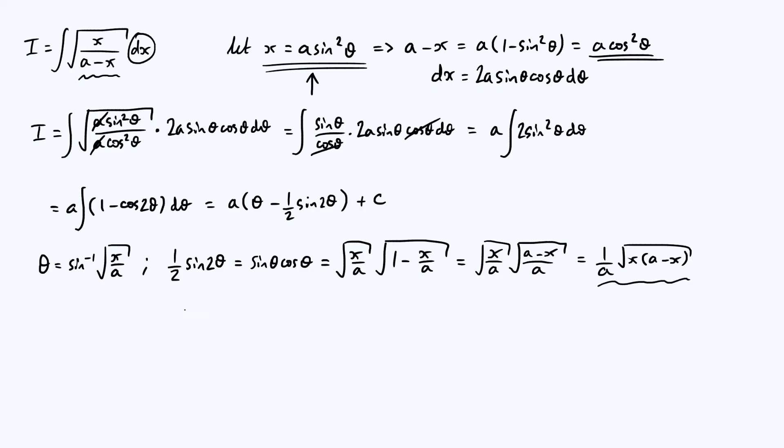And so we're nearly done. We can now conclude that therefore integral i is, well, the first term was a theta, which is a times arc sine of the square root of x over a. Now, the second term was minus half sine of 2 theta, but there is also this pre-factor of a. That pre-factor of a cancels with this 1 over a that we found down there.